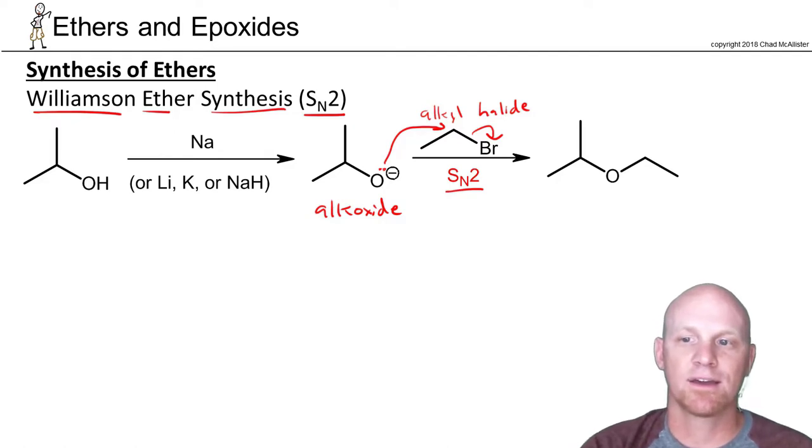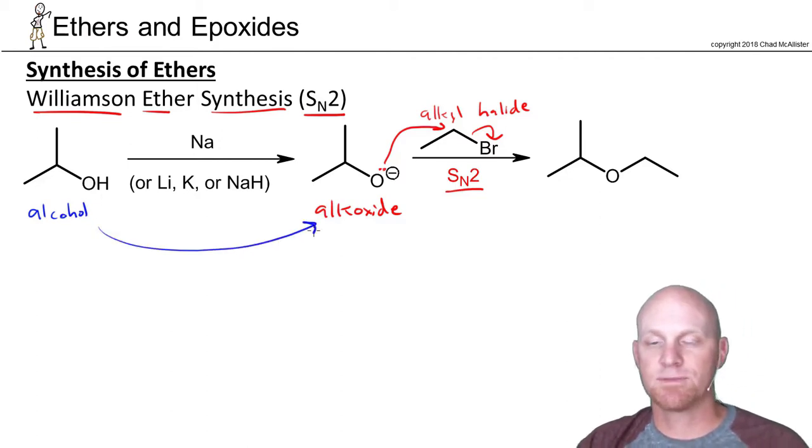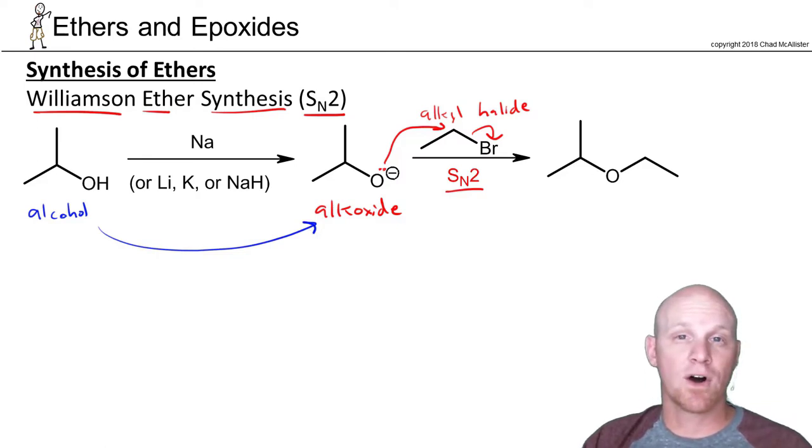Now this alkoxide you have to make and generally make it from the corresponding alcohol. And we just need to deprotonate it to make the alkoxide. And if you recall, to deprotonate a normal alcohol not a phenol, something like sodium hydroxide is generally not going to work. You've got to use something stronger: sodium metal, kind of a redox deprotonation here is a little funky, or lithium or potassium or sodium hydride will all get the job done.